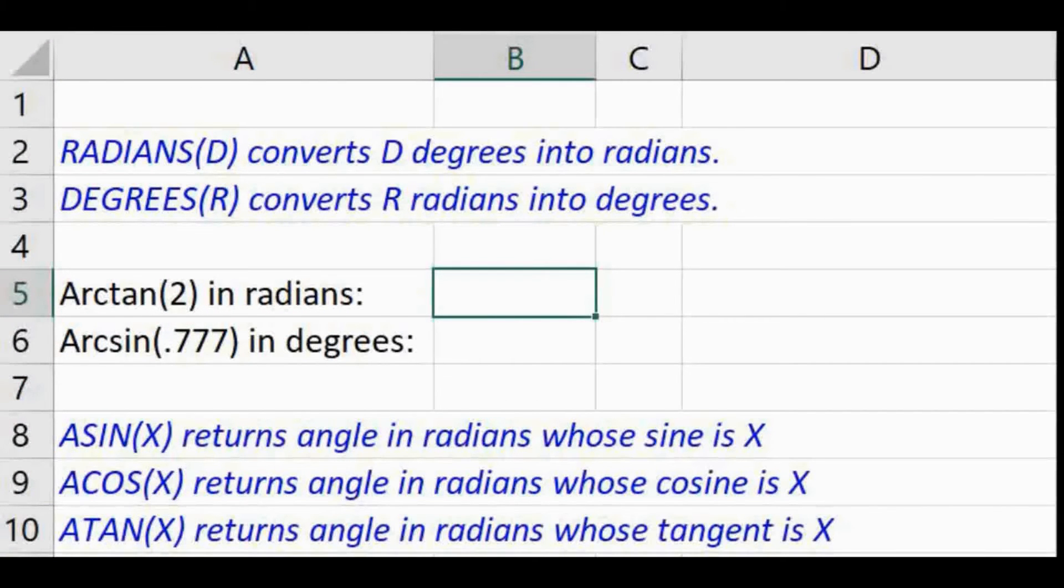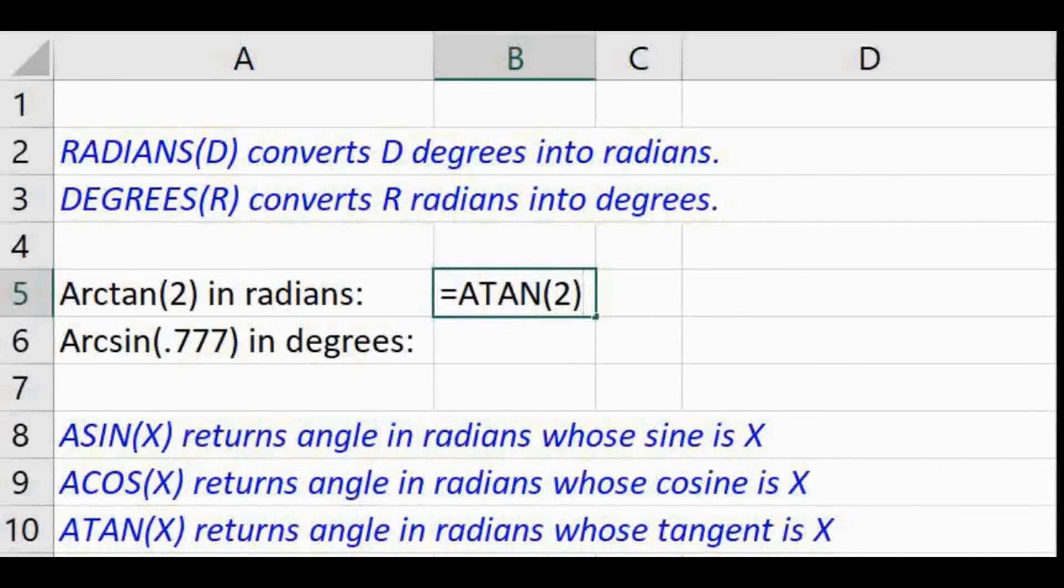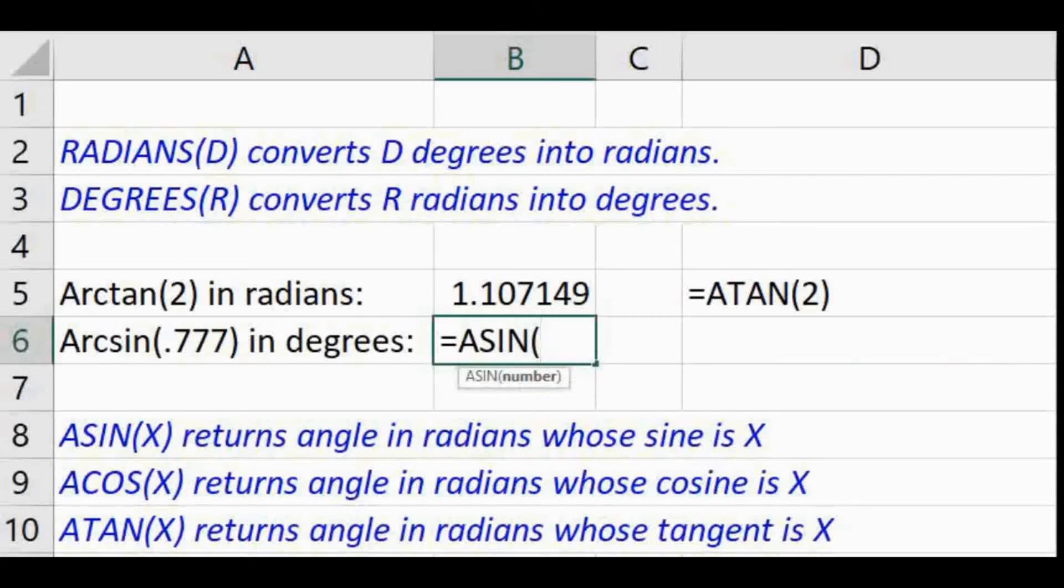Excel has inverse trig functions named ASIN, ACOS, and ATAN, which will all return angles in radians. So the angle whose tangent is 2 is ATAN of 2. The angle whose sine is 0.777 is found using the Excel function ASIN of 0.777.